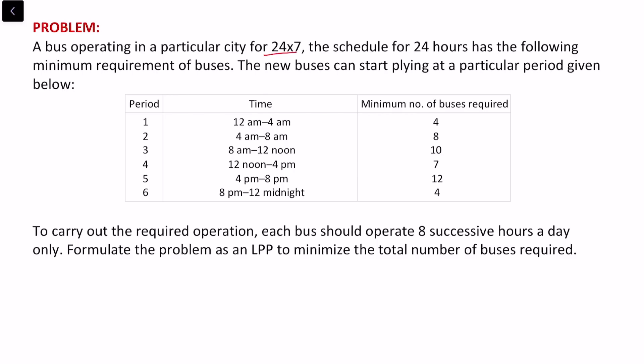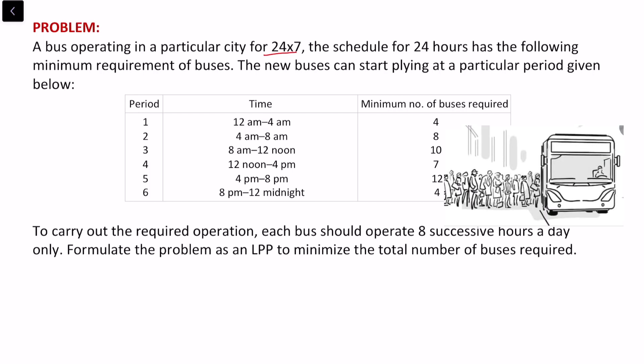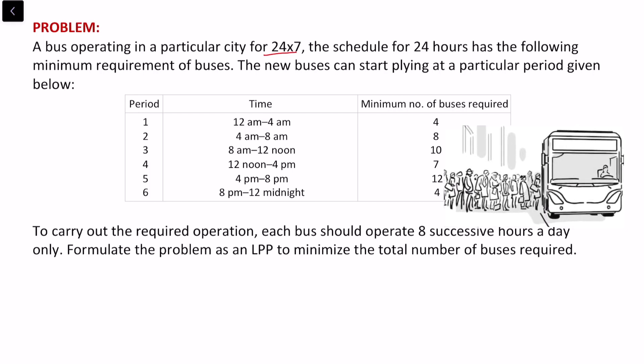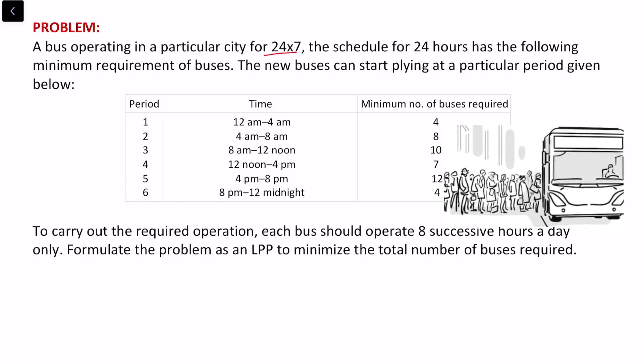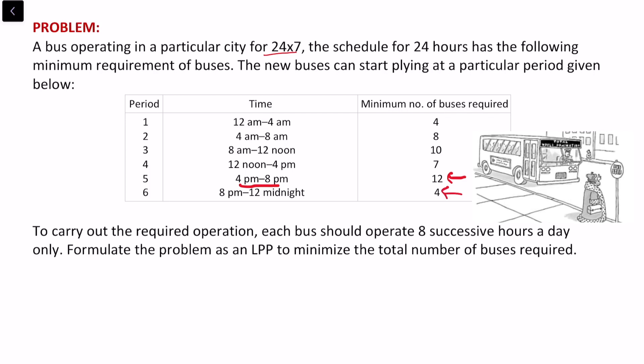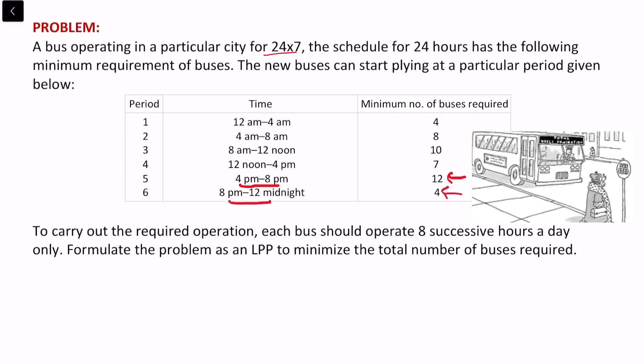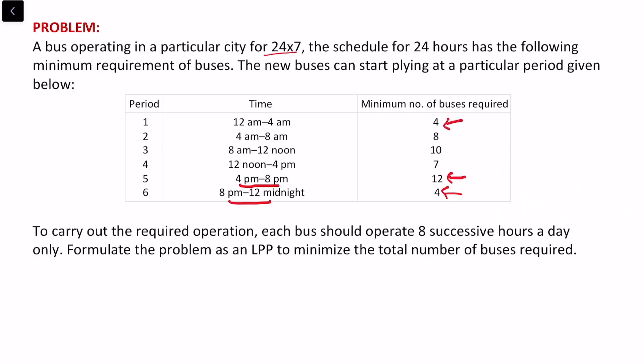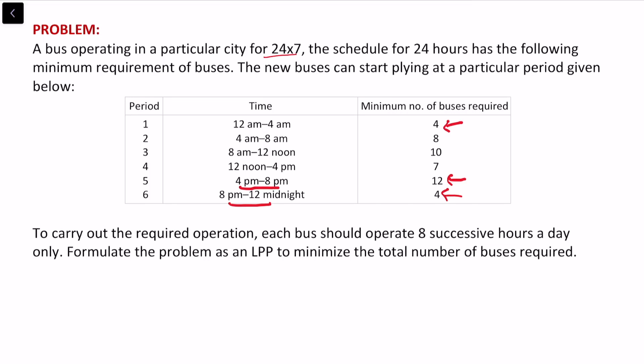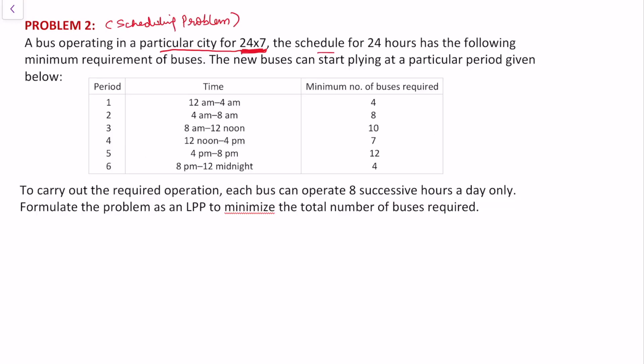The next problem is a scheduling problem, which arises in various situations involving cost or profit per schedule. A bus operates in a city 24/7. There are peak-hour buses between 4 PM and 8 PM and non-peak buses during midnight and early morning schedules. We want to plan the schedule and determine how many buses to operate so that the whole schedule is fulfilled.